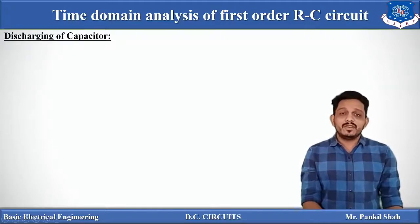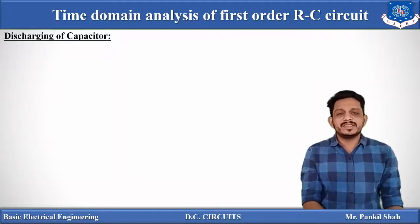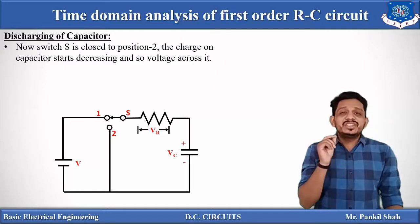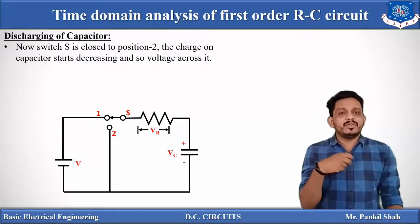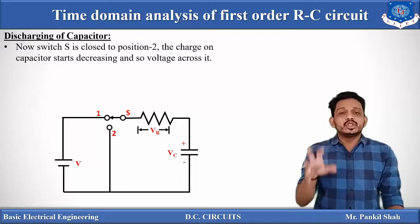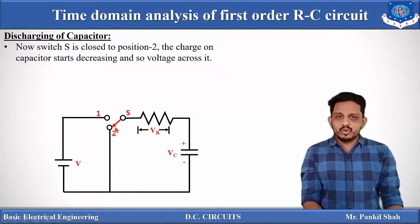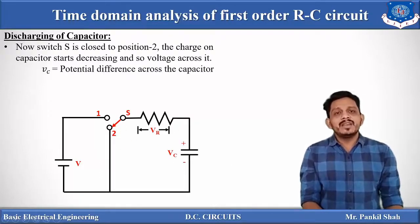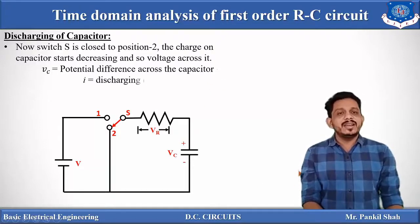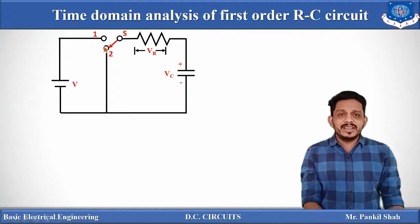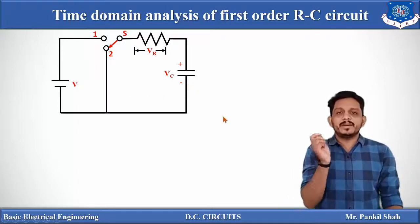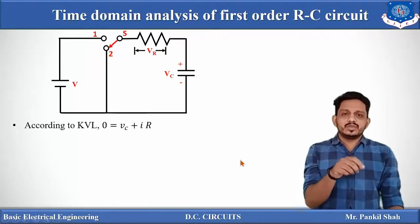Now let us see the discharging of the capacitor. Once the capacitor is fully charged, no current can flow from battery to capacitor or back. We change the position of the switch. By changing the switch to terminal two, a path is formed through which the capacitor discharges itself through the resistor. Here Vc is the potential drop across the capacitor, I is the discharging current, and Q is the charge on the capacitor. At the instant of switching to terminal two, at t = 0, the capacitor has maximum voltage V (equal to the battery voltage), so the initial condition is t = 0, Vc = V.